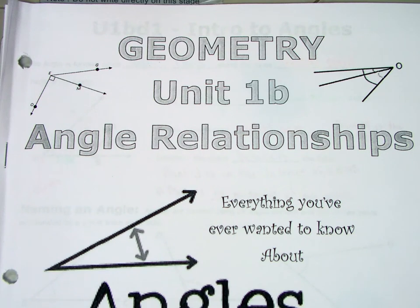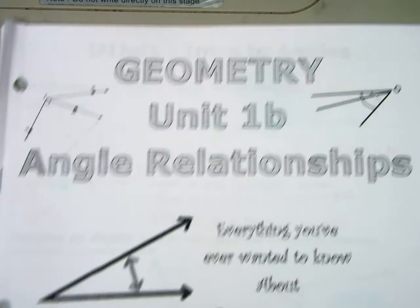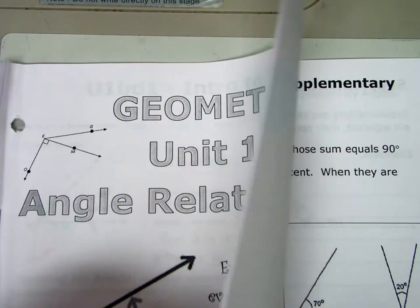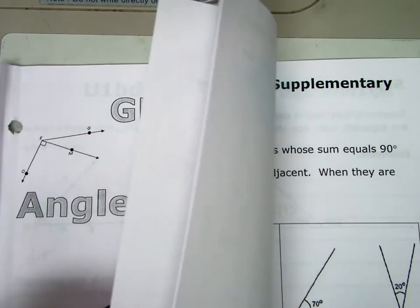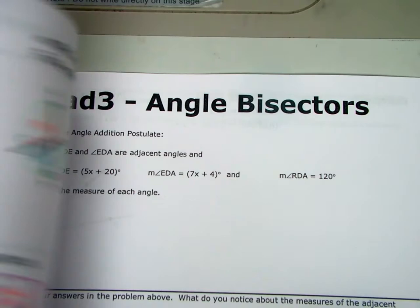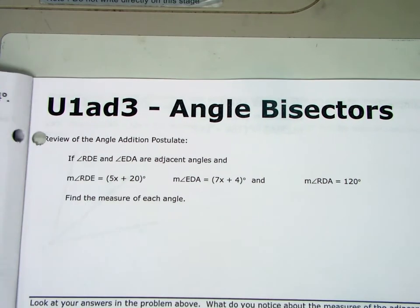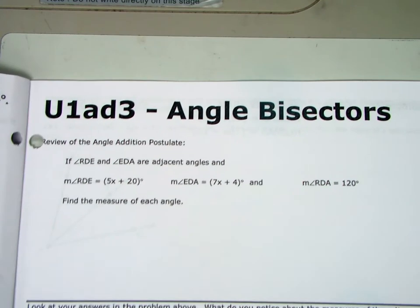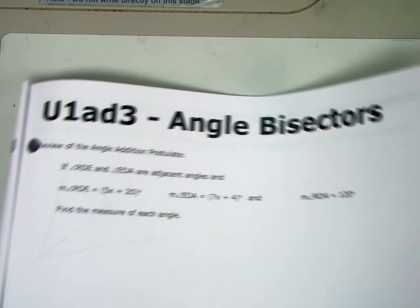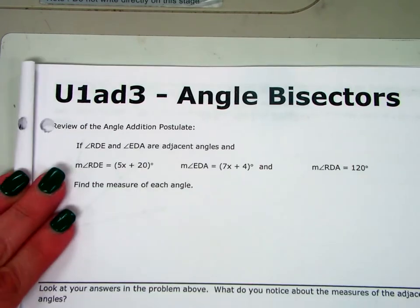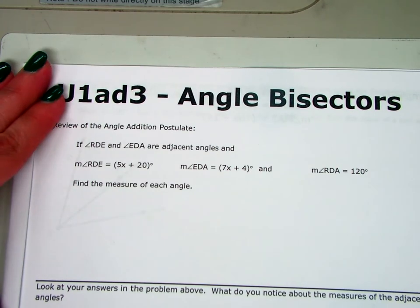Alright, so today we are going to be looking at day 3 in our angle relationships unit, which is going to go over bisected angles. If you go to day 3 in your journal or notes packet, we're going to be looking at angle bisectors. Before we do that, we are going to review what we did in the last lesson where we looked at the angle addition postulate.